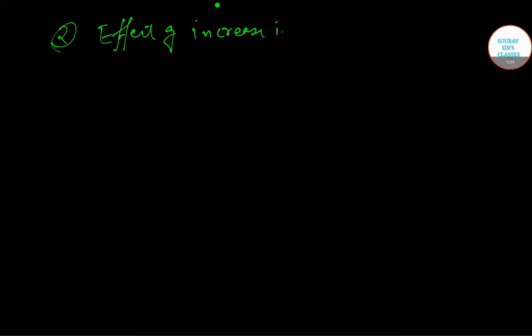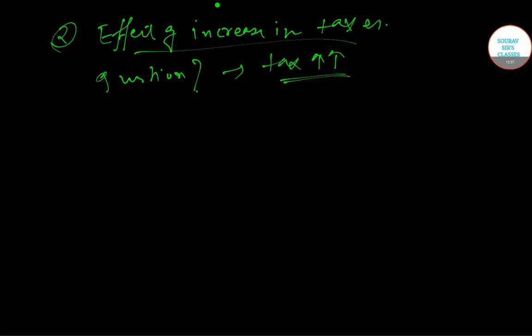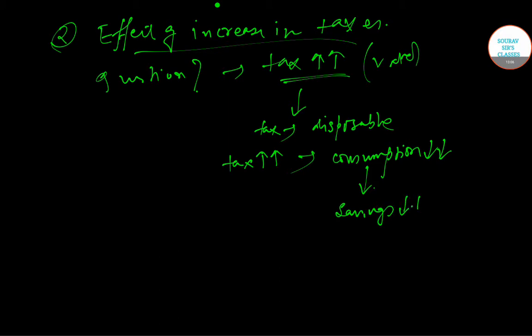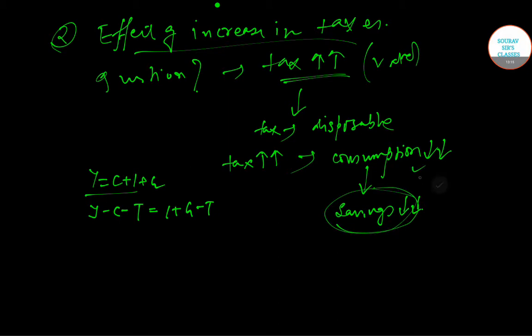Our second fiscal policy change is the effect of an increase in taxes. The question is: what will happen if the government increases the amount or rate of tax? For consumers, tax is directly related to their disposable income. If tax increases then consumption will fall, and if consumption falls then savings will fall as well.